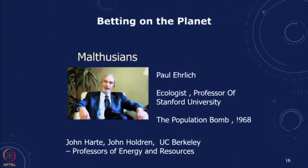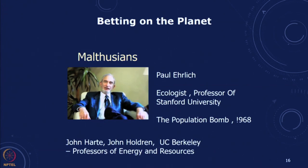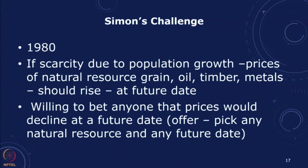On the other side of the bet were the Malthusians — Paul Ehrlich, John Harte, and John Holdren — who argued we have one earth with finite resources and need to conserve and use them efficiently. Simon issued an open challenge: if scarcity due to population growth causes prices of natural resources — grain, oil, timber, metal — to rise at any future date, he was willing to bet anyone, because he believed that technology and human innovation would prevent scarcity and that prices would decline at any future date.